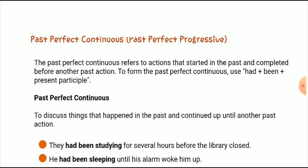The past perfect continuous is also known as the past progressive tense. It refers to actions that started in the past and continued before another past action. To form it, use 'had' plus 'been' plus the present participle.